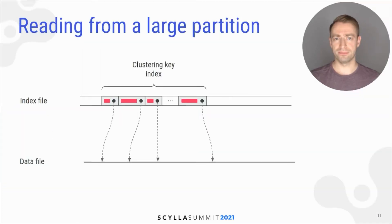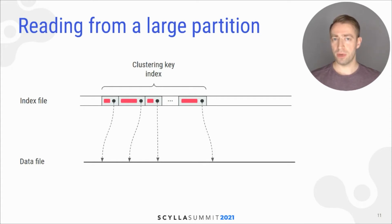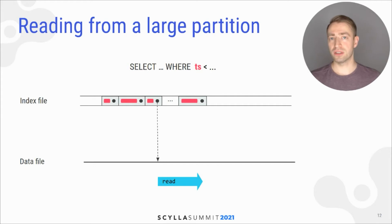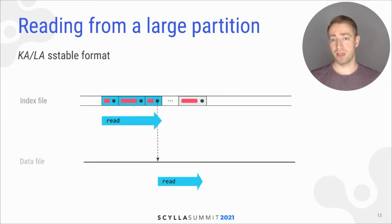So how did we do it? The main problem was the performance of reading from the SS table index, which contains the clustering key index. When you read from an SS table, you first locate an entry in the index to narrow down the position in the data file to read from. In the LA SS table format, you had to scan through the whole clustering index from the beginning to find the entry.